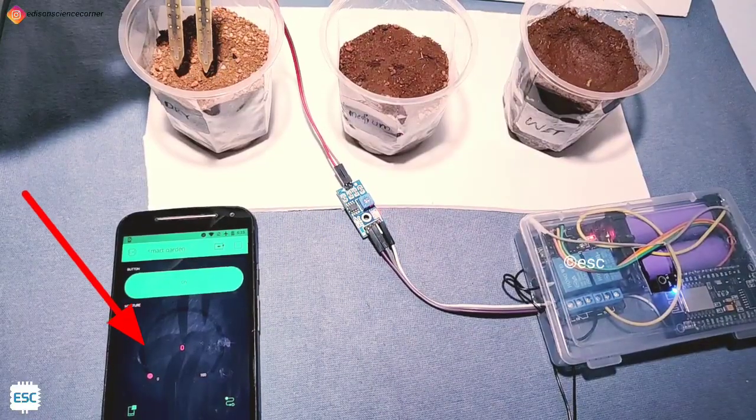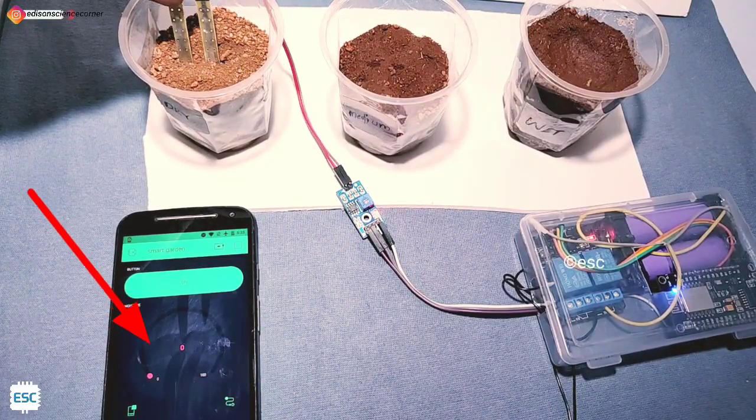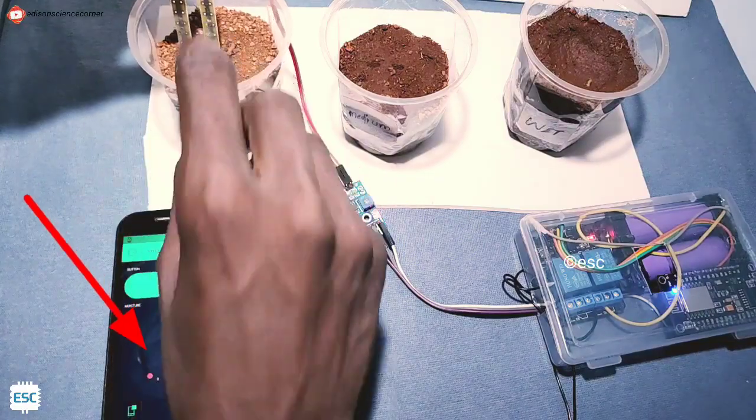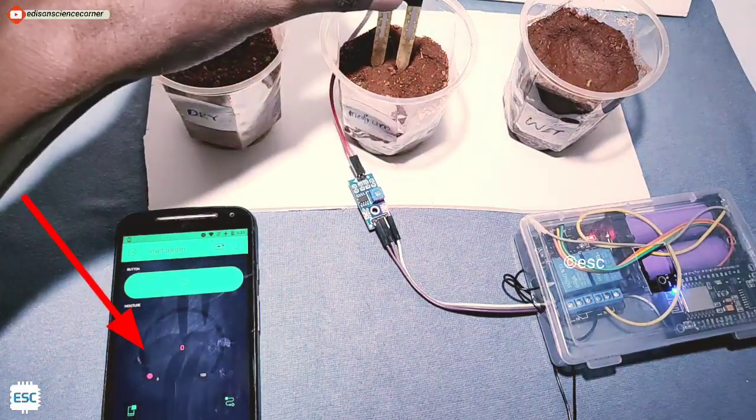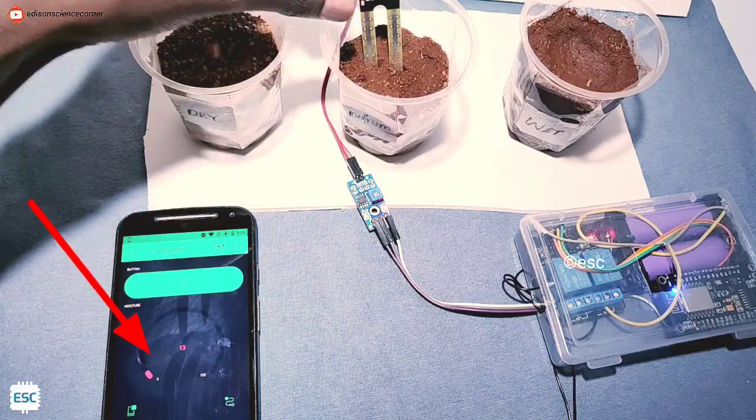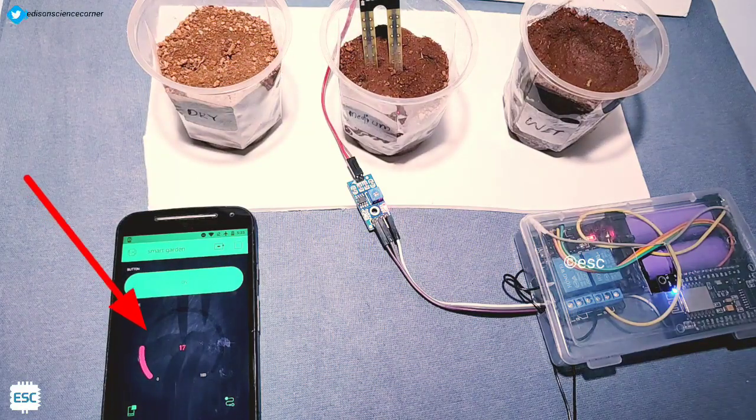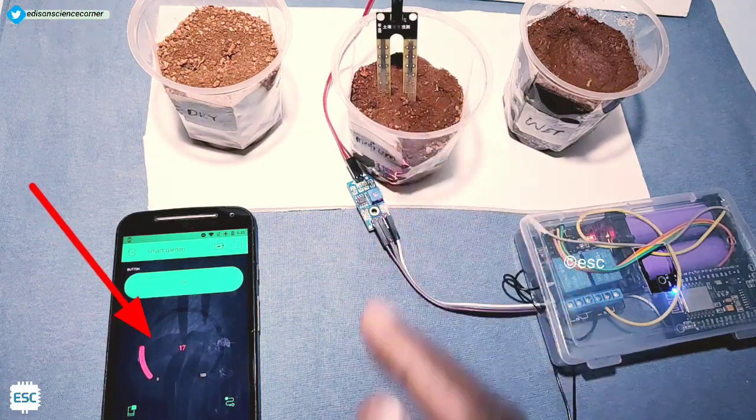First I place the probe in dry soil - you can see here moisture is zero. Next in the second glass, that is in medium range, the app shows a little bit moisture.